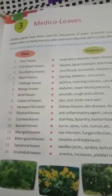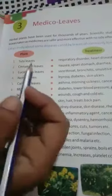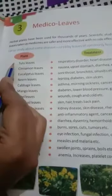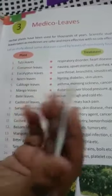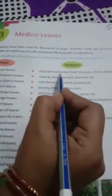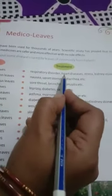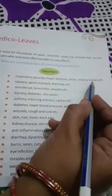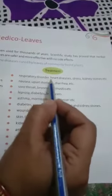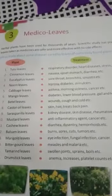So, here we will start from number one. Number one is Tulsi Leaves. Tulsi के जो पत्तिया हैं — Respiratory Disorder, Heart Disease, Stress, Kidney Stones, etc. ये बिमारियां हैं जिस बिमारी में ये leaves यूज की जाती हैं.